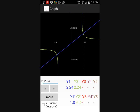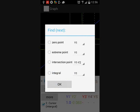Now we are interested in calculating the definite integral between two points. Activate the second cursor by checking the checkbox. Click the more button. Now the integral option will show up.